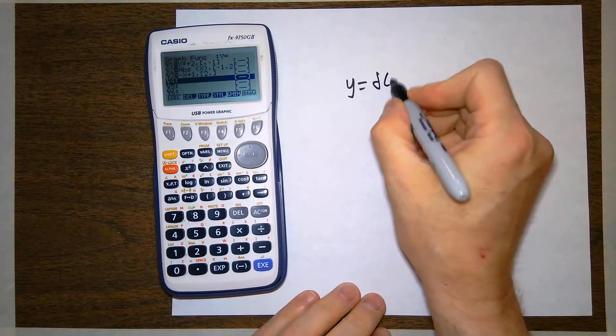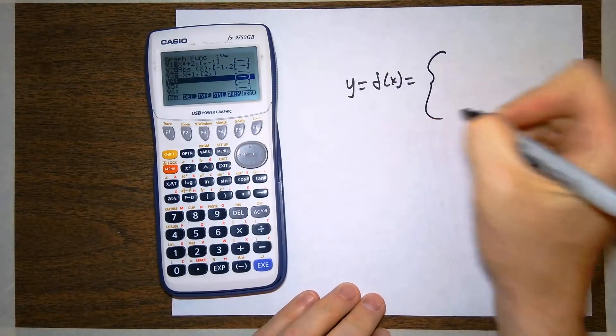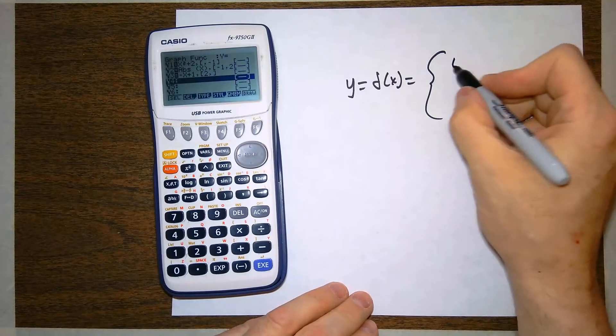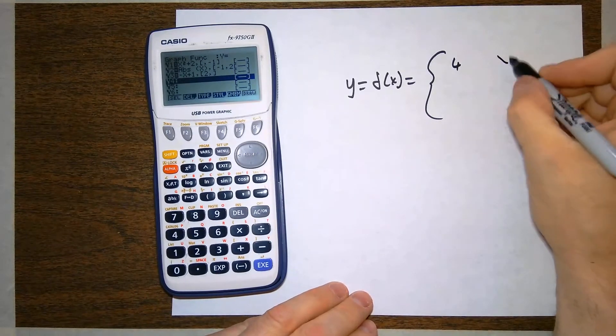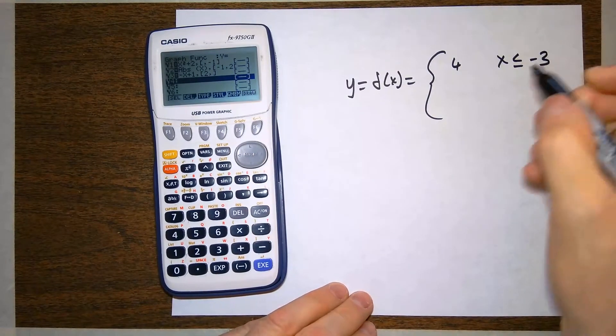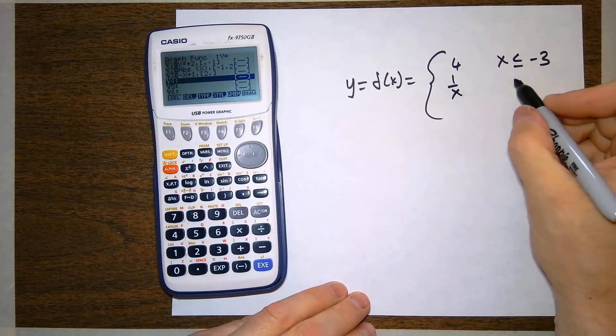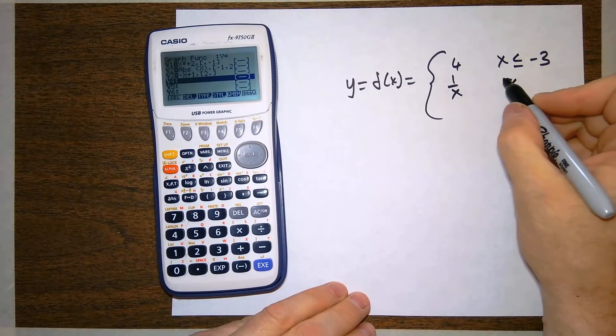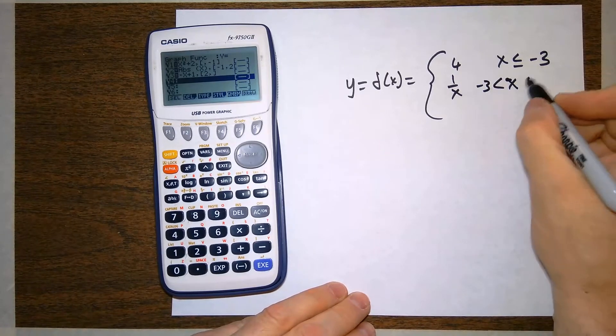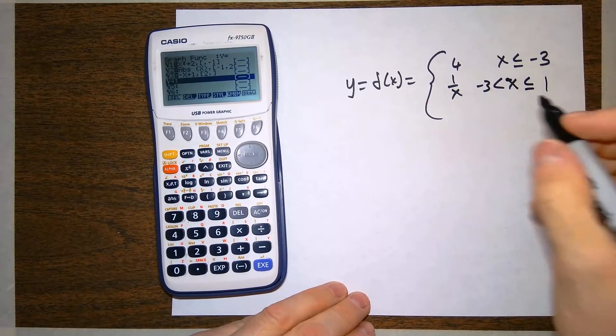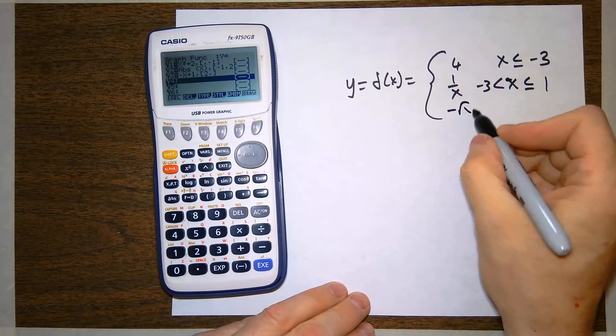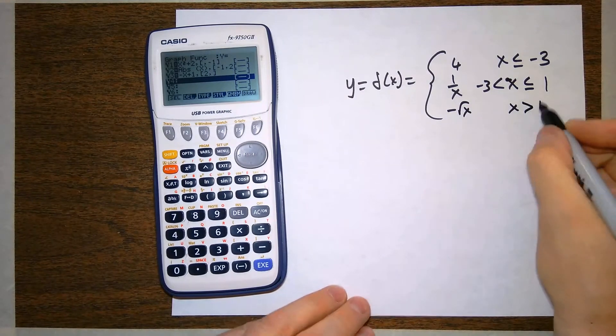y defined as f of x, piecewise defined as the constant 4 when x is less than or equal to negative 3. The reciprocal function, 1 over x, when x is greater than negative 3 but less than or equal to 1. And the negative square root of x when x is greater than 1.